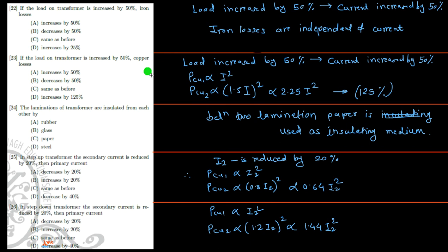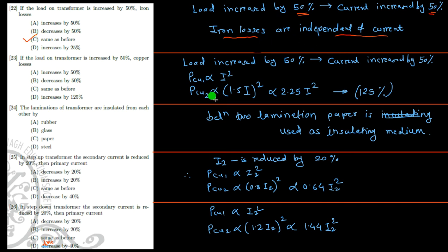If the load on the transformer is increased by 50%, what happens to the iron loss? If the load is increased by 50%, the current is also increased by 50%. But iron losses are independent of current — they depend on the applied voltage. Hence, iron losses will remain the same as before.